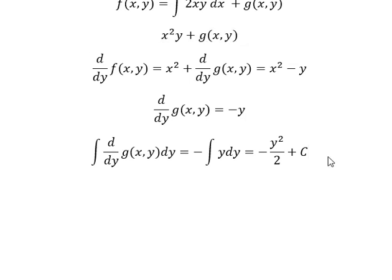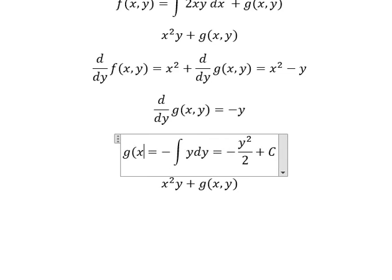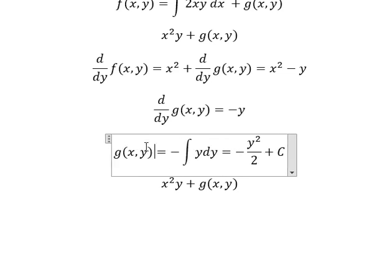The integration gives us g(x,y), and g(x,y) equals negative y²/2. So we put this into our equation, and we know that f(x,y) equals C.